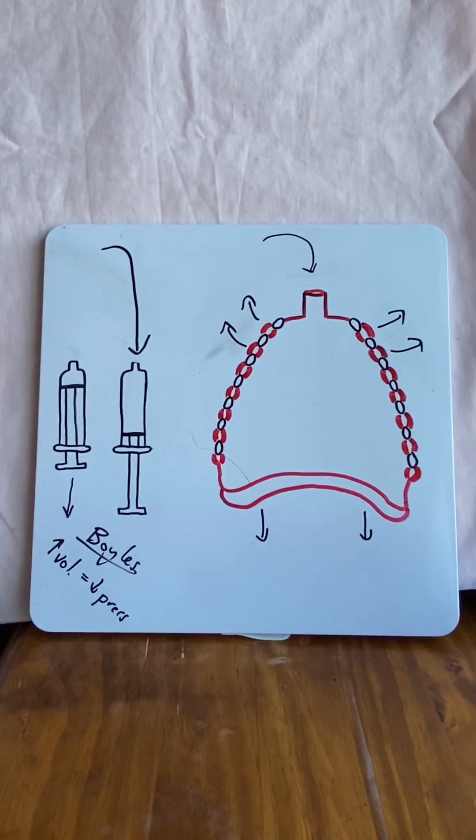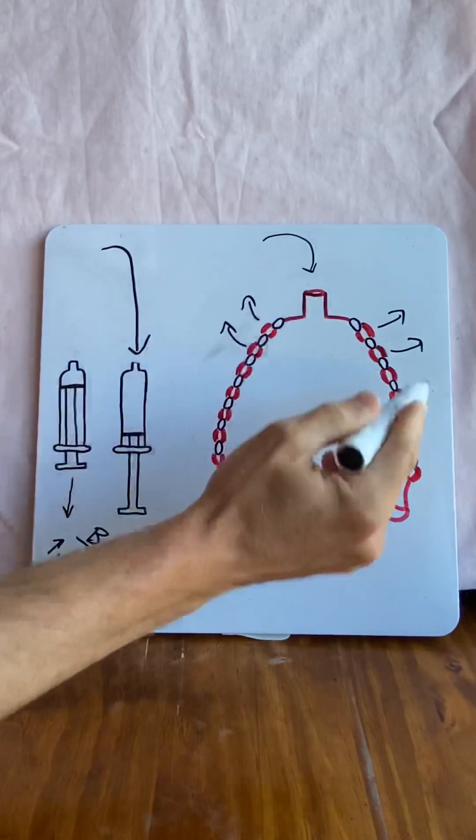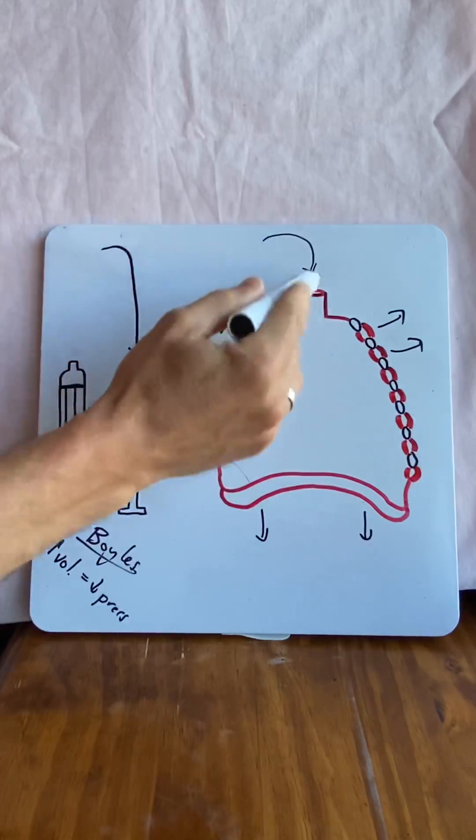We've got even more accessory muscles like the pectoralis muscles, for example, like the sternocleidomastoid and the scalenes. If we contract them, we further increase the volume of the thoracic cavity and even more air comes in.